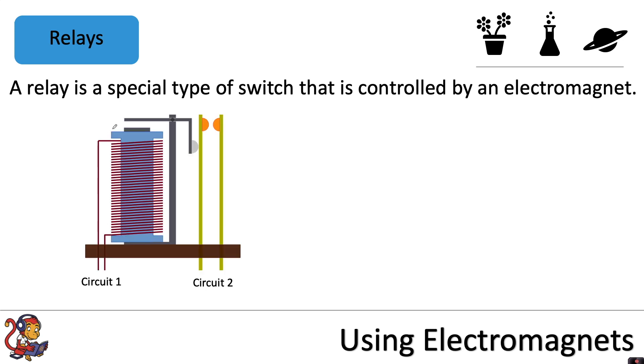In this image we have this electromagnet here with many coils of wire to make it very strong, and this would be attached to one particular circuit. If we were to switch that electromagnet on, it would generate a magnetic field.